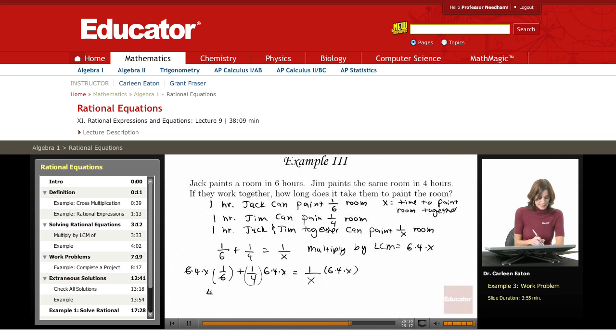That gives me 4X, so I'm getting rid of my fractions. That's why I multiplied by this. The X's cancel to give 6X. The fours cancel to give 6X. Here, the X's cancel to give me 24, which is 6 × 4.